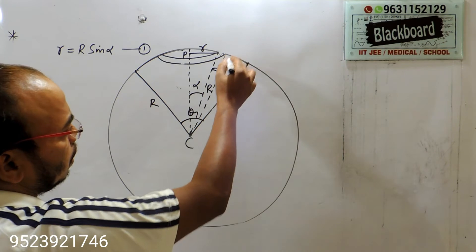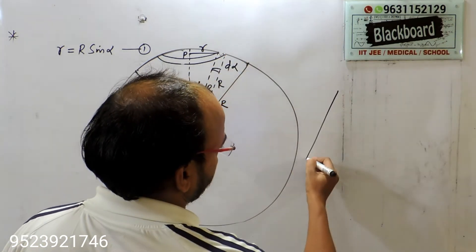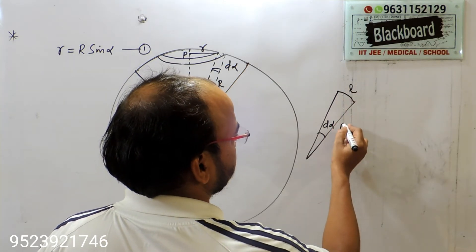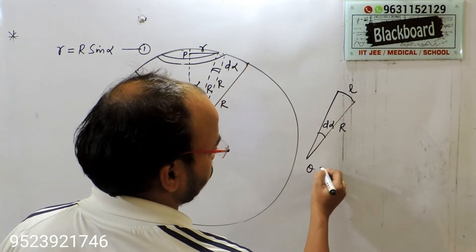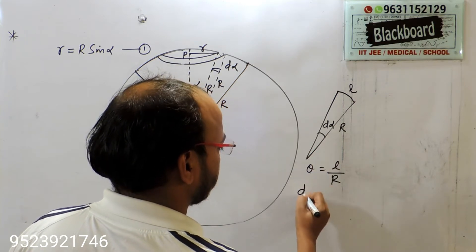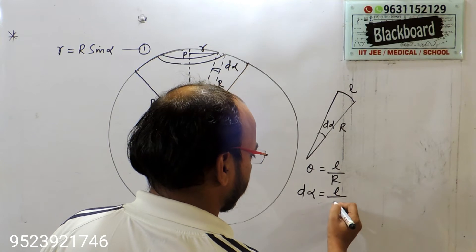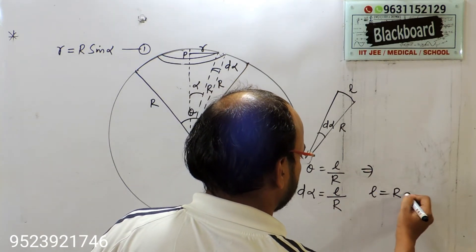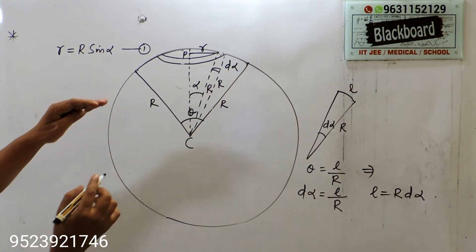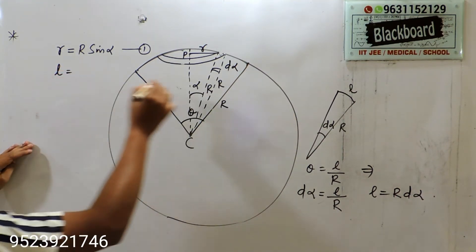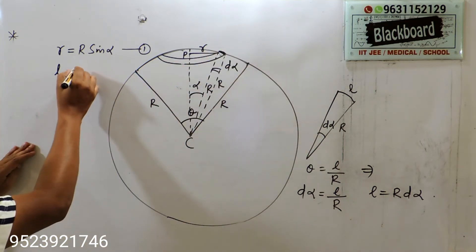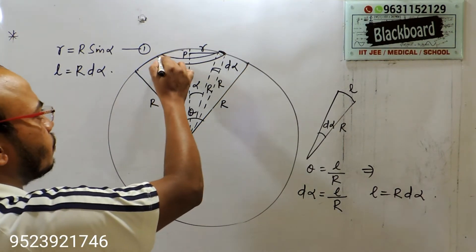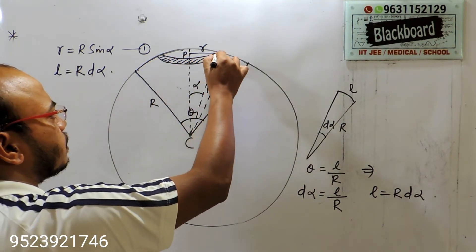Next, this arc is formed here, and this angle is d(alpha). Let this arc length be L and the radius be R. You know theta = L/R, so here d(alpha) = L/R, which means L = R d(alpha). That means the arc length is R d(alpha). Now we are going to find the area of this ring.